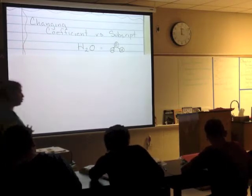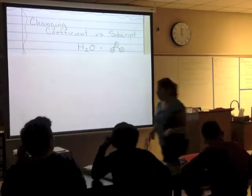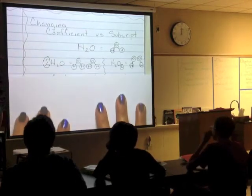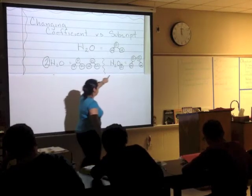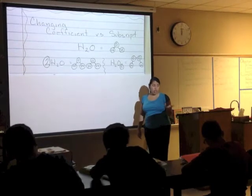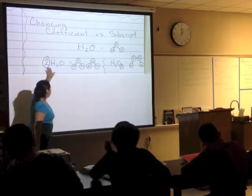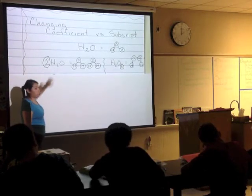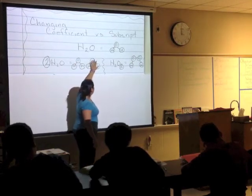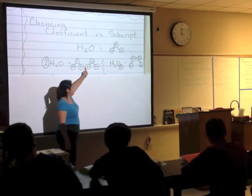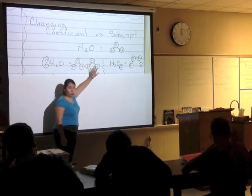Now we're going to look at how H2O changes if we add a coefficient compared to how it changes if we add a subscript. We're going to add some twos in there — a 2 as a coefficient, the big number up front, and a 2 as a subscript, the little number. If I look at the first one, I had a 2 in front of H2O. That two tells me I have two H2Os — two hydrogens, one oxygen bonded together, and I have two of these. These two are not attached — they're just two of them there. So I have two water molecules.